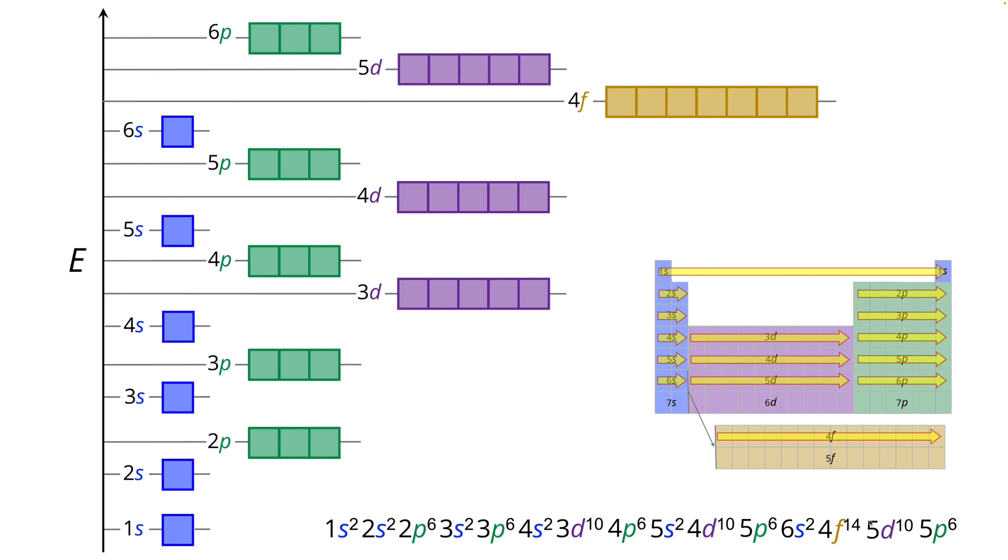Now the seventh row fills out as well. It's not shown here. You can probably guess the pattern by now. It's going to be 7s2 then 5f14 then 6d10 and finally 7p6.